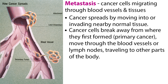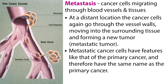Cancer cells do not serve any useful function, and they can migrate through blood vessels and tissues, spreading and growing in other body locations. This process is called metastasis, and is the major cause of cancer death. Cancer can spread by moving into or invading nearby normal tissue. The cancer cells break away from the primary cancer, move through the blood vessels or lymph nodes, travel to other parts of the body, and at a distant location pass through vessel walls and into surrounding tissue, forming a new tumor — the metastatic tumor.